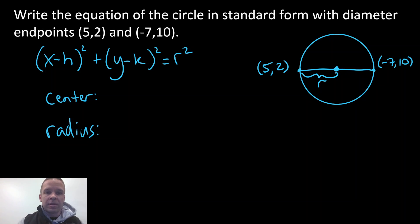All right, so first off, midpoint between those two points. So my midpoint is gonna be the x values. I'm gonna have 5 plus that -7 divided by 2, and I'll have my y values, 2 plus 10, divide that by 2.